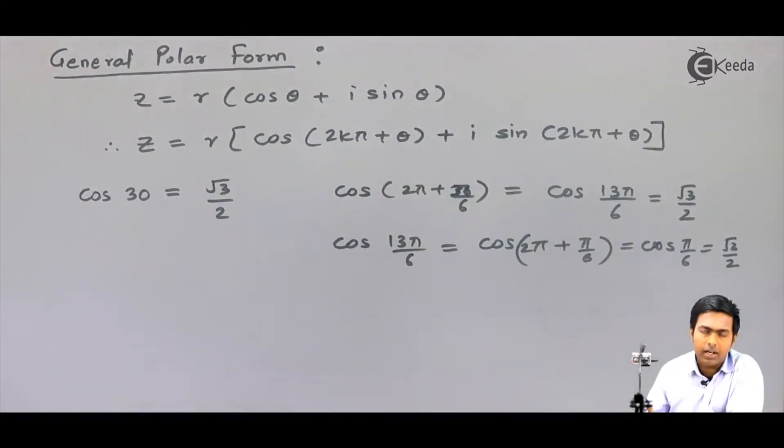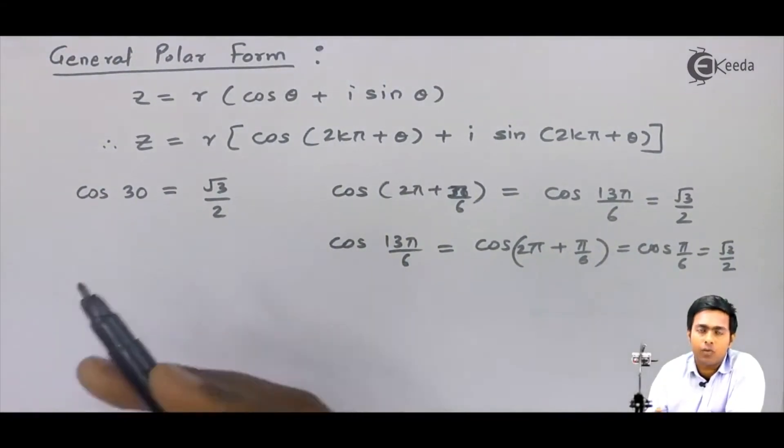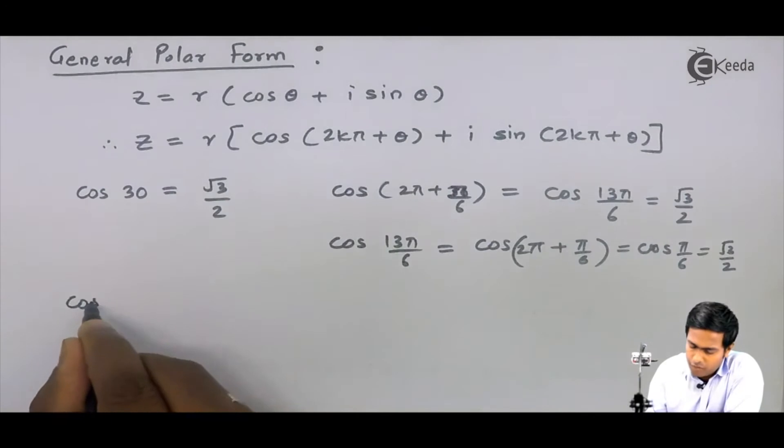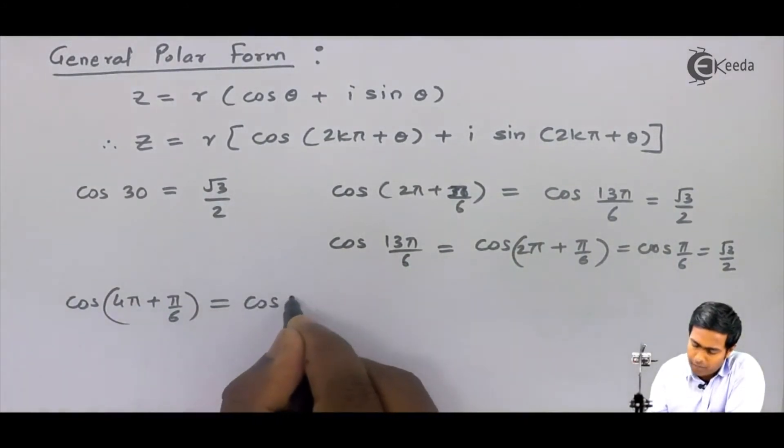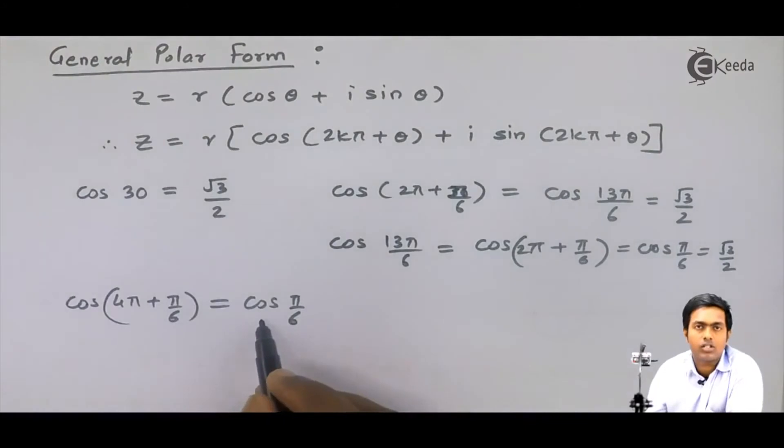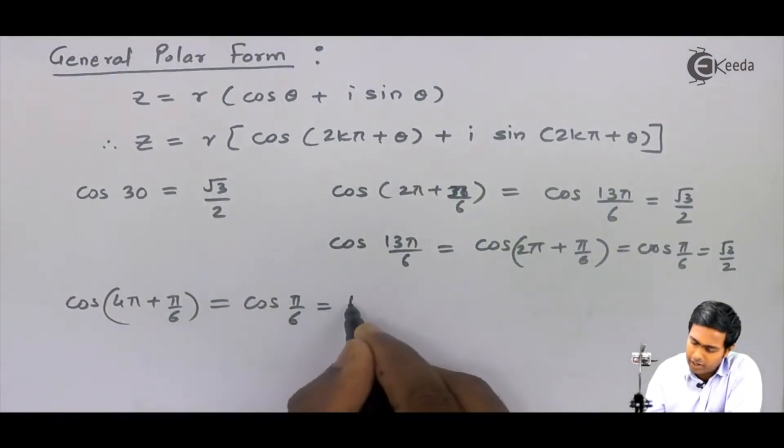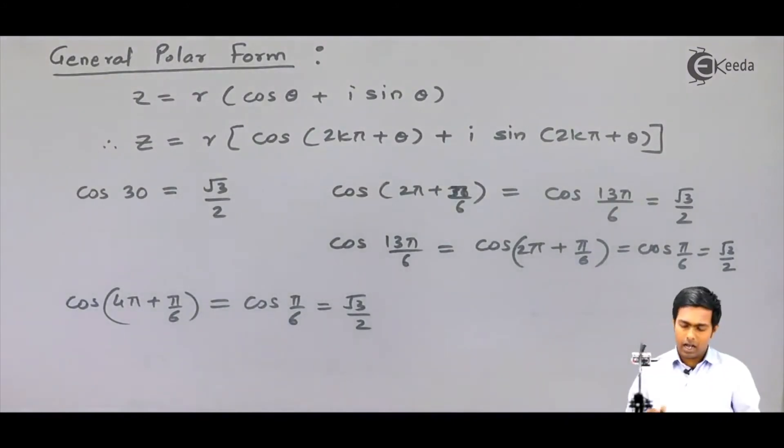Similarly, if I will add 4π in this 30°, that is π/6, let's see what happens. So cos of 4π plus π/6 will give me again cos of π/6, because cos of 4π plus θ is cos of θ, and it will again give me √3/2. So here you can observe that after every 2π angle, we reach at the same point.